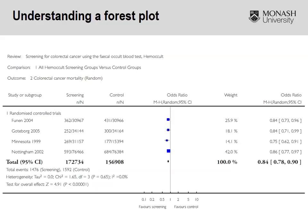This is what a forest plot looks like. This example is taken from a Cochrane review looking at screening for colorectal cancer using the FOBT, comparing screening versus control, with the outcome being colorectal cancer mortality. Along the left side we've got the four studies included in the systematic review for this outcome. We have our intervention group — screening — and our control group. Taking the first study by Foonin, 362 out of 30,967 participants in the screening group had the outcome, compared to 431 out of 30,966 in the control group.